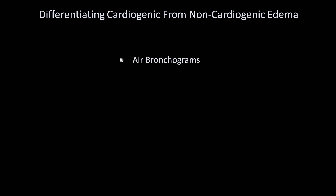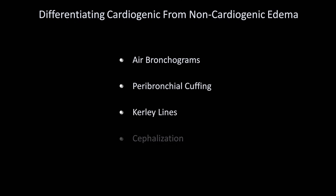In order to differentiate cardiogenic from non-cardiogenic edema on x-ray, there are five radiographic features which one can look for: air bronchograms, peribronchial cuffing, curly lines, cephalization, and the bat's wing pattern.